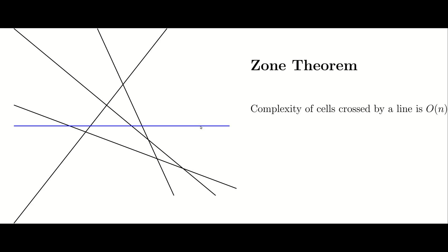The zone theorem is a statement about the cells intersected by this blue line. In the picture, the cells intersected by the blue line have been drawn in gray.